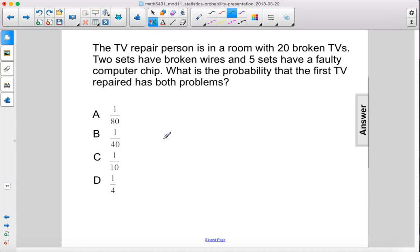The TV repair person is in a room with 20 broken TVs. Two sets have broken wires, and five sets have a faulty computer chip. What is the probability that the first TV repaired has both problems?